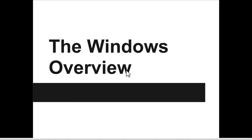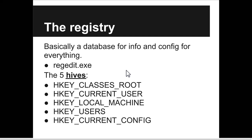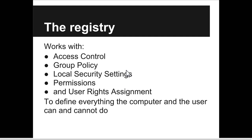What you need to start off knowing about Windows: the registry — basically the brainstem and entire nervous system of a computer running Windows. You use regedit.exe to view and modify it. There are five hives — they're called hives because some developer in early Windows was terribly afraid of bees, and other developers trolled them by naming the core of Windows 'hives,' and it remained. The registry works with access control, group policy settings, local security settings, permissions, and user rights assignments, and basically defines everything the computer and user can and cannot do.